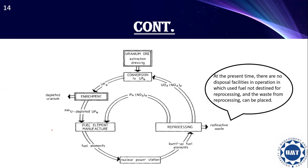You can see here a diagram summarizing the cycle of nuclear fuels. First, fuel elements are manufactured and used in the nuclear power station. After that, the burnt-up fuel elements are reprocessed and specific elements are added. Then conversion takes place, followed by enrichment, and this cycle continues.